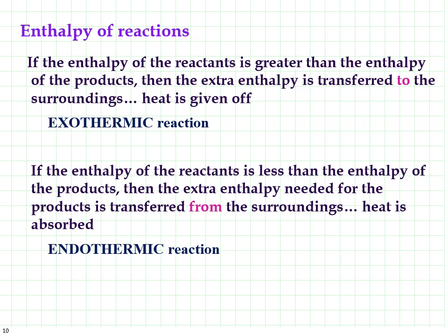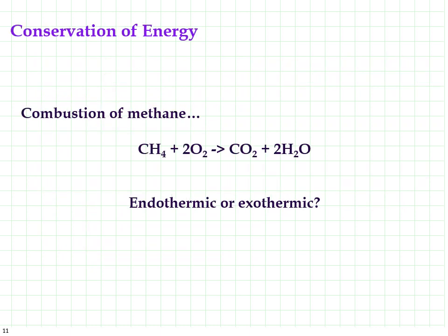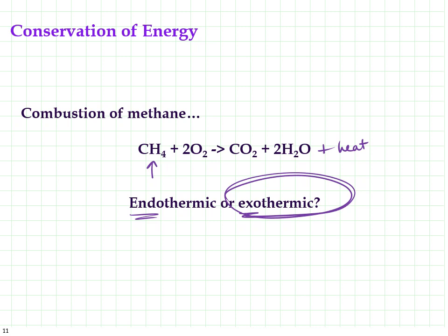If the enthalpy of the reactants is greater than the enthalpy of the products, all that extra energy needs to be transferred to the surroundings — like with our Bunsen burners. If the enthalpy of the reactants is less than what the products need, we need to get that extra enthalpy from the surroundings. We call that an endothermic reaction. Exothermic — 'exo' means energy is coming out of the reaction, given away to the surroundings. Endothermic — 'endo' means we're sucking energy into the reaction from the surroundings. Methane's combustion? Definitely exothermic — lots of heat released.